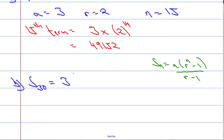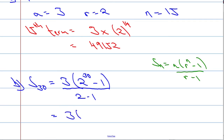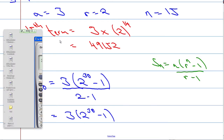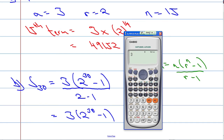S of 30: A is still 3, R is still 2, and n in this case is going to be 30. So we get 3 times 2 to the power of 30 minus 1, all over R minus 1 which is 2 minus 1, giving us 1. So we're going to get 3 times 2 to the power of 30 minus 1, and this is a job for the calculator.